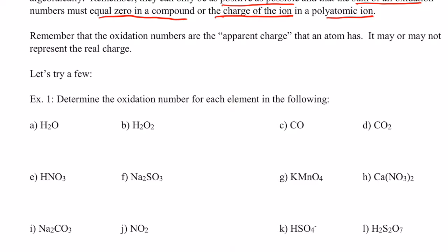Let's work through some examples. For letter a, water (H2O): find the most electronegative element — that's oxygen, with a negative two oxidation number. The other element, hydrogen, must have a positive charge. There are two hydrogens and the sum must equal zero, so each hydrogen has an oxidation number of positive one.